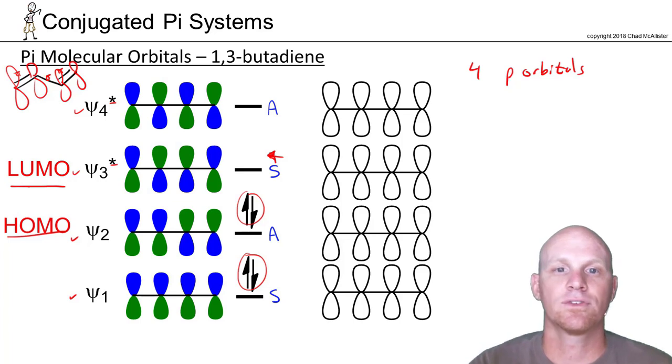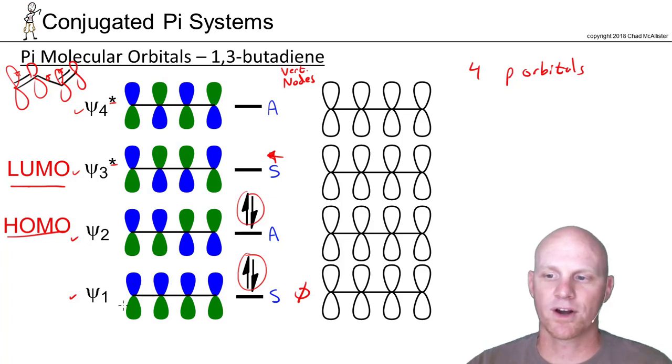And we also said that if you count the number of vertical nodes, you always start with zero. In psi-1, there are no nodes. It is only constructive overlap all the way across. Now in psi-2, the only place there's not constructive overlap is right here. And so you get one node.